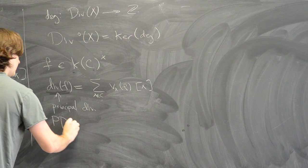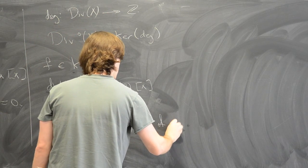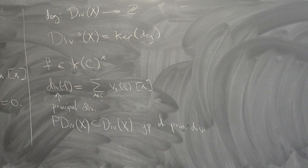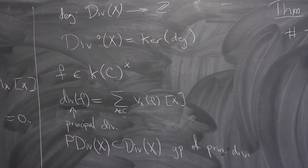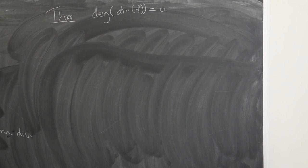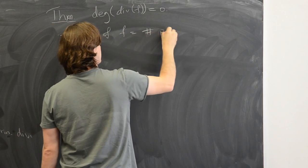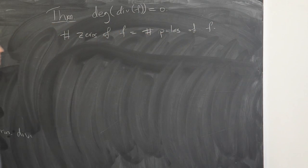I'll write PDivX for the set of principal divisors, which is a subgroup. An important theorem — which I'm not going to prove but you should try to prove yourself or look up — is that principal divisors have degree zero. In other words, the number of zeros of a function equals the number of poles, where by 'number' we count with multiplicity in the appropriate way.